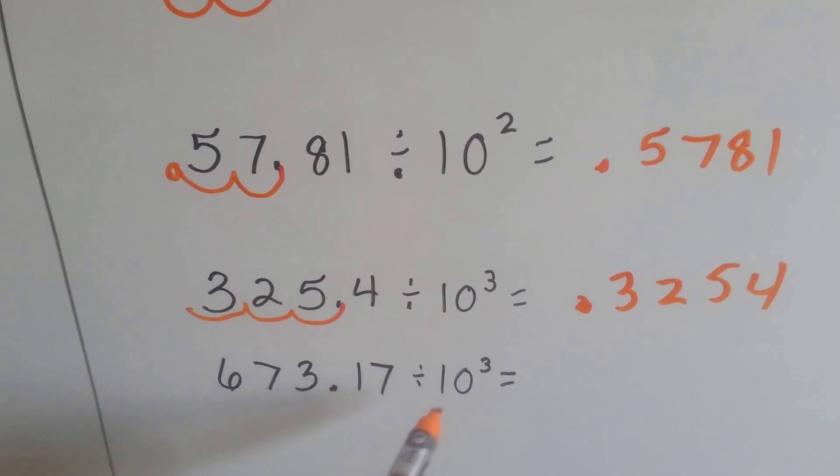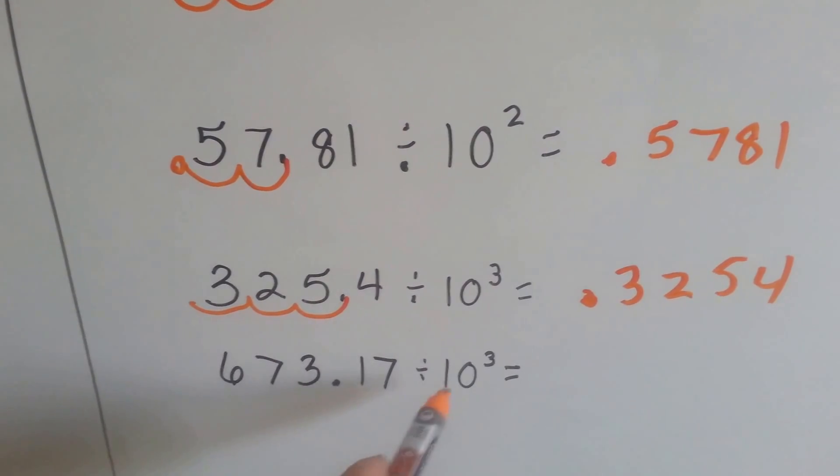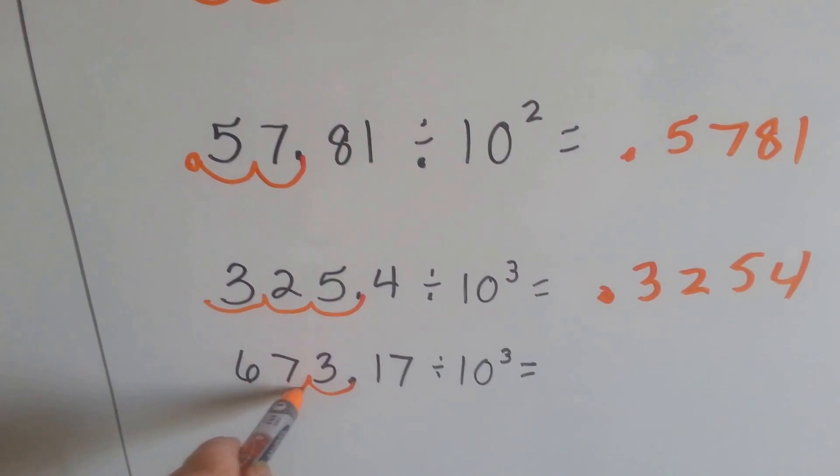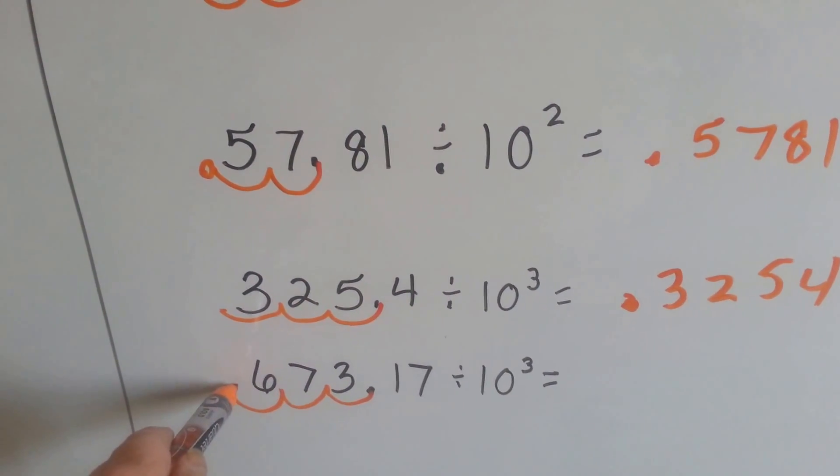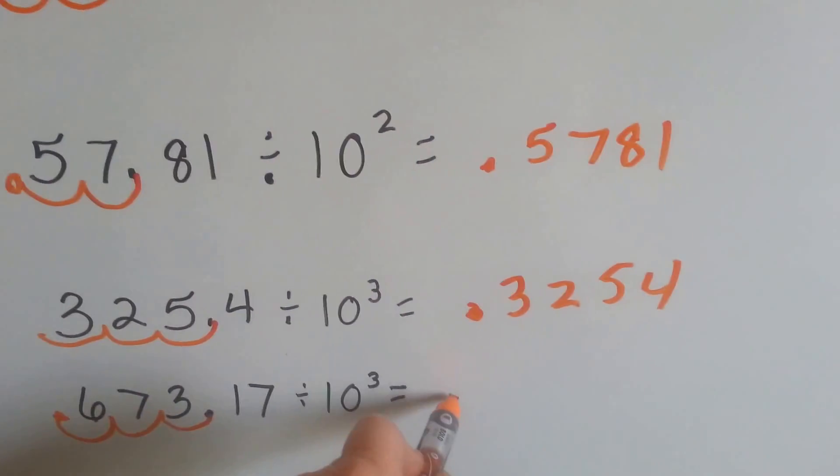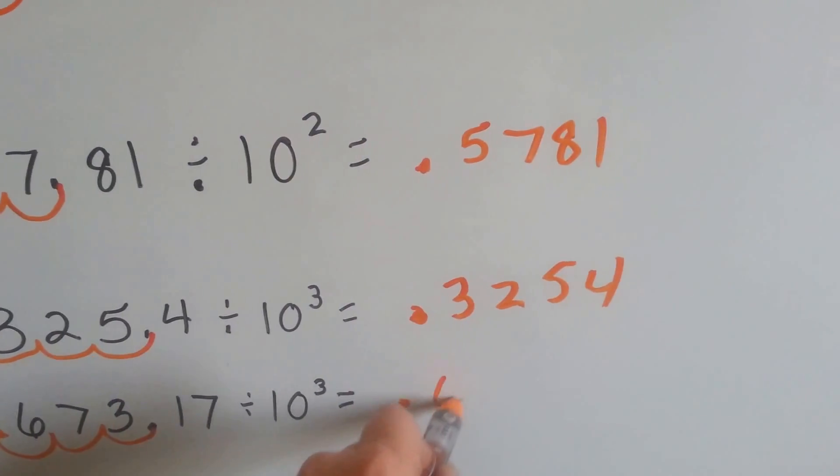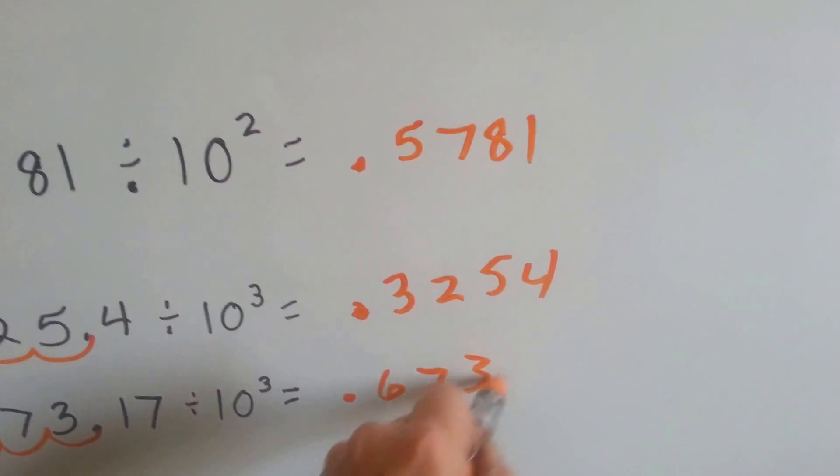How about this one? This one's also 10 to the third. We're going to hop 3 times, 1, 2, 3. So, our answer, that's a big decimal, isn't it? 0.67317.